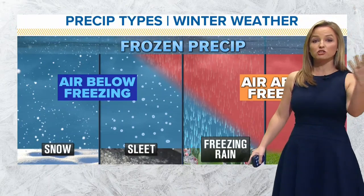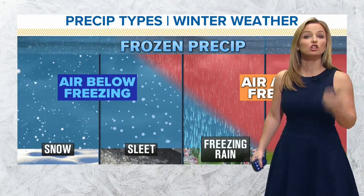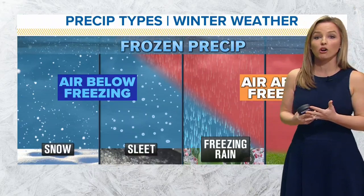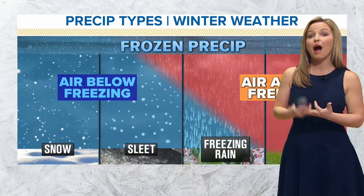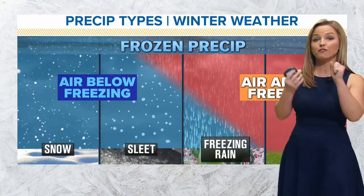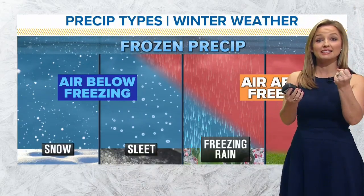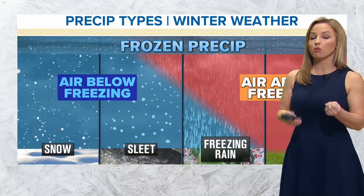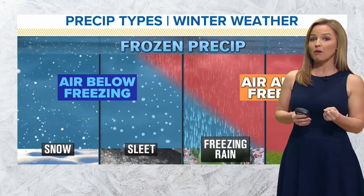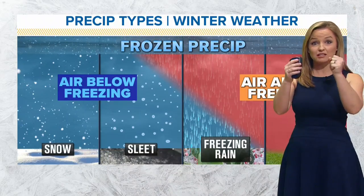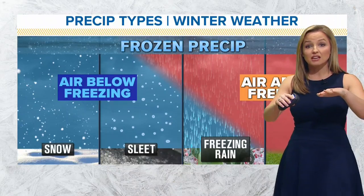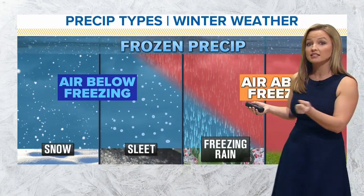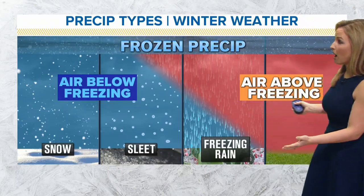Freezing rain at the surface looks like raindrops to us, but when it hits a car, a sidewalk, or a power line, it freezes on contact. That can cause major problems, especially with power lines, because as it freezes, the weight of it can sometimes snap those power lines and cause power outages.